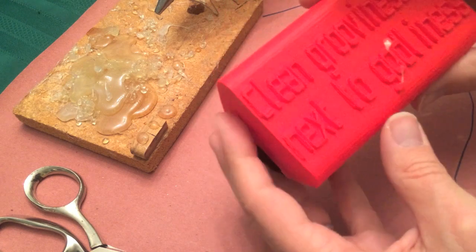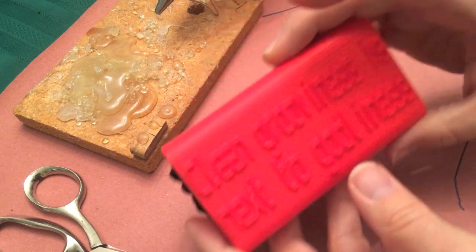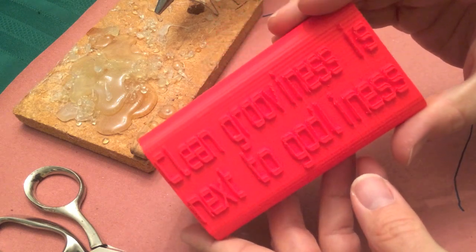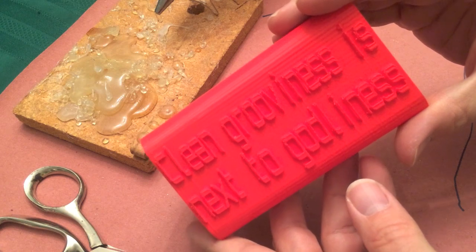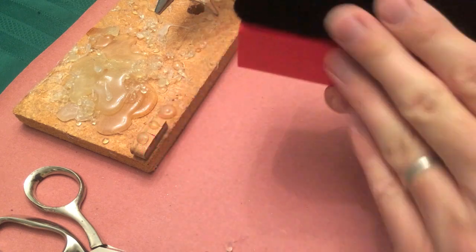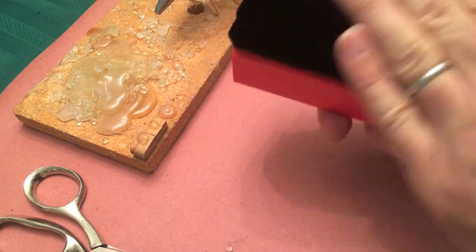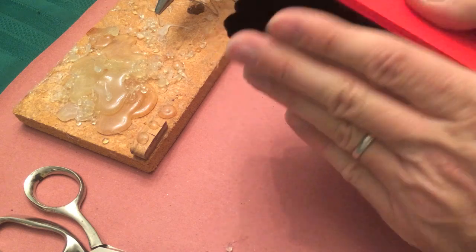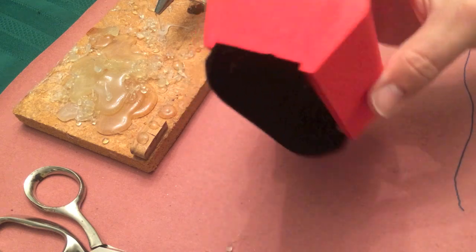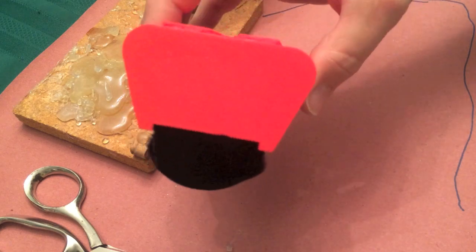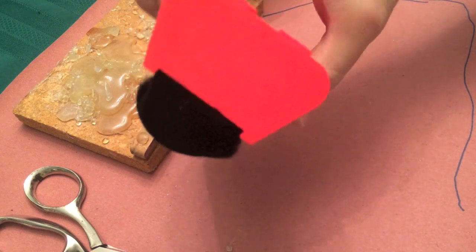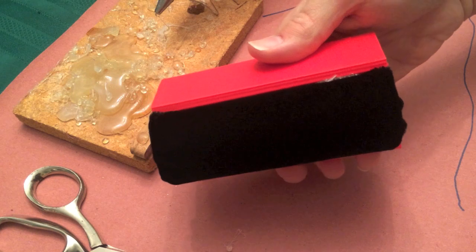Now the saying I printed on mine was clean grooviness is next to godliness because everybody wants a nice clean groove on their vinyl records. You don't want to have to listen to all that dust and garbage that might have accumulated. So there it is. You're going to use a nice rocking motion on the surface of your record to do the cleaning.